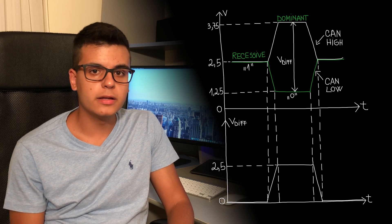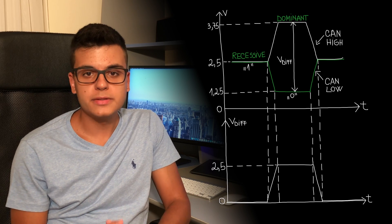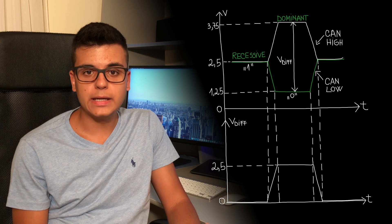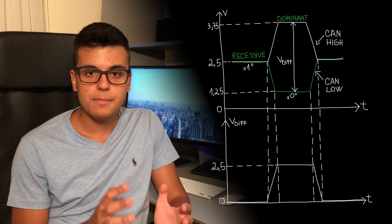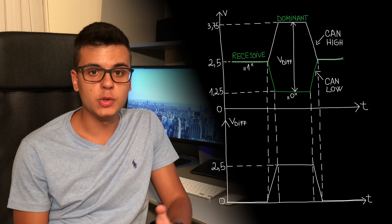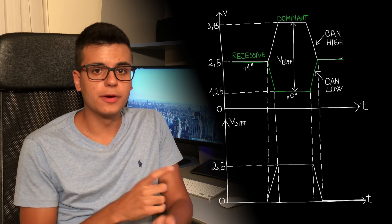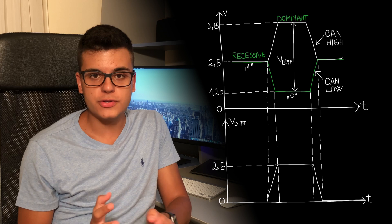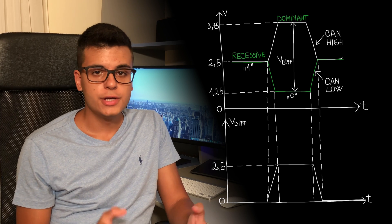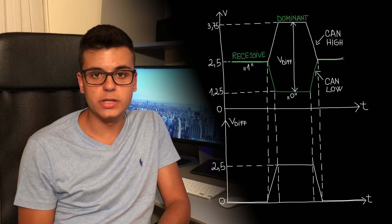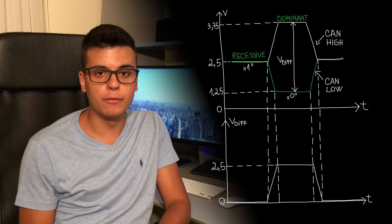The way data is sent on the CAN bus is through differential signaling. What this means is that we use both lines — both CAN high and CAN low — to transmit data at the same time, because what matters is the difference in voltage between these two lines. As you can see from the graph, the recessive level means that both lines stay at around 2.5 volts, so the differential voltage between the two lines is going to be close to 0 volts.